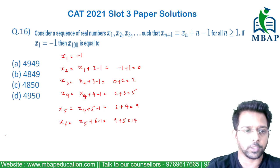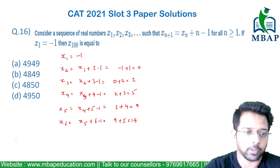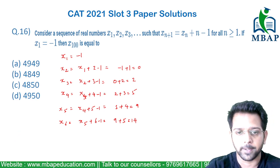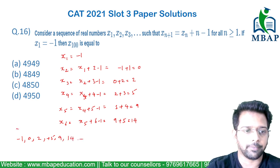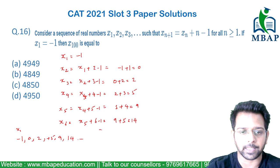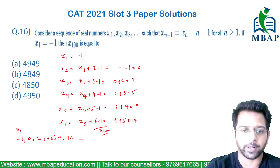If I substitute all the values right from x1 to x6, I am getting the terms as minus 1, 0, plus 2, plus 5, 9, 14, likewise. These are values of x1 till x100. I need to find the value of x100.